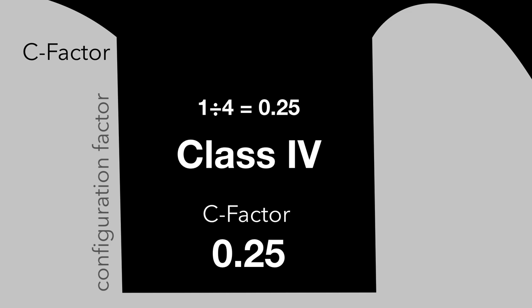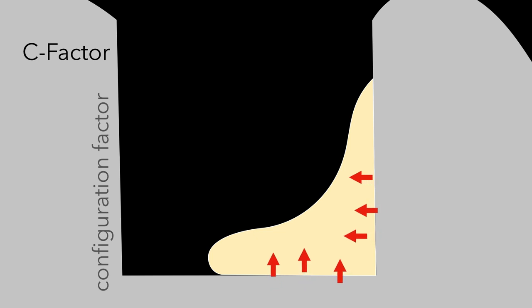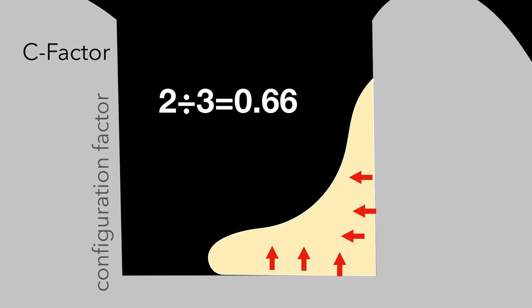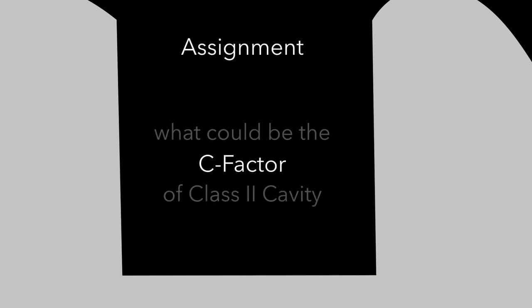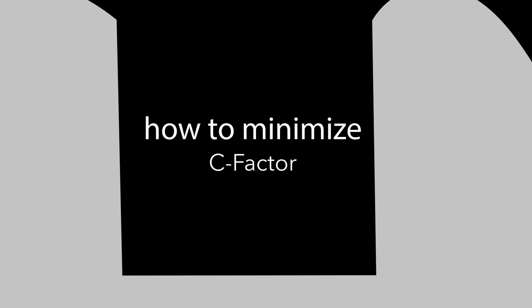For a Class IV cavity, we have one bonded and four unbonded surfaces, giving the least C-factor of 0.25. For a larger cavity example shown here — two bonded walls and three unbonded walls — we get a C-factor of 0.66, which is less than one. As an assignment, final year and third year students should calculate the C-factor of a Class II cavity and submit answers in the WhatsApp group.